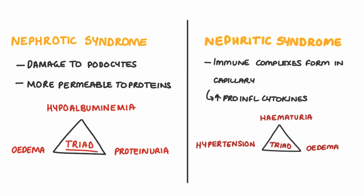In summary, nephrotic syndrome results in the patient having high urinary proteins, edema, and low albumin in the blood. The main cause includes minimal change disease. Whereas nephritic syndrome results in hematuria, hypertension, and edema, and the main cause includes IgA nephropathy.